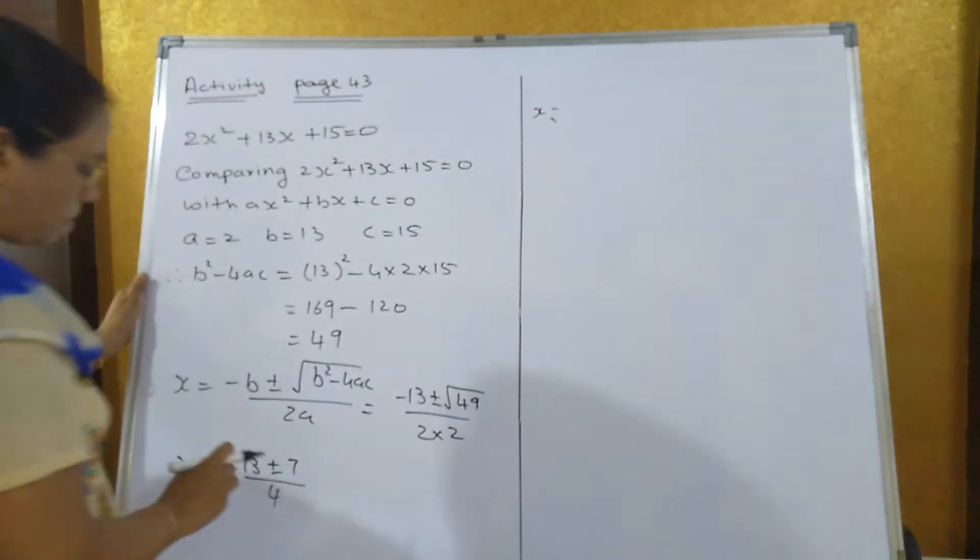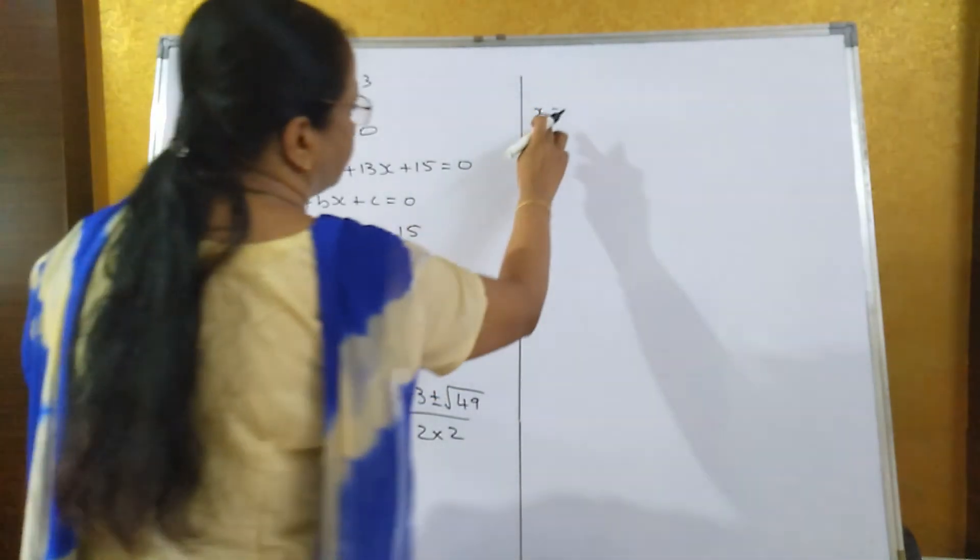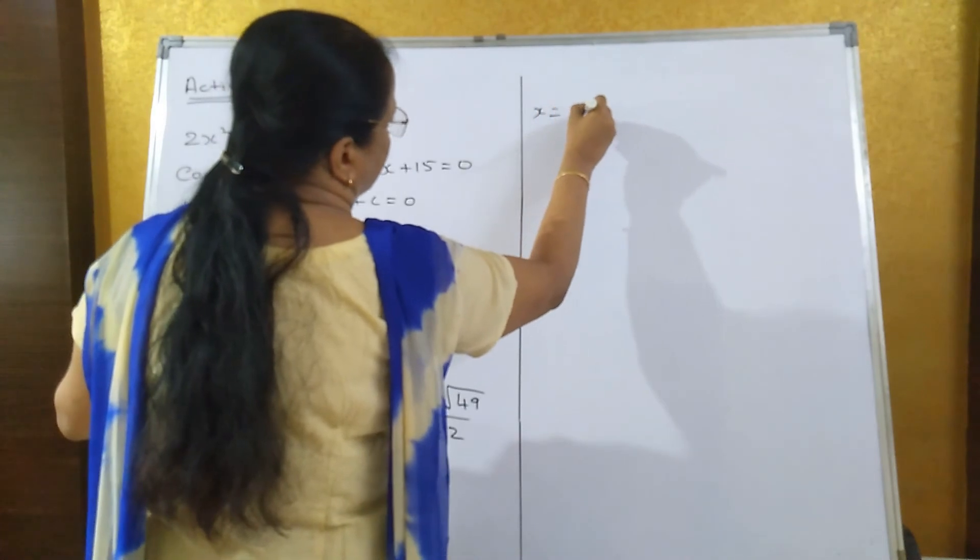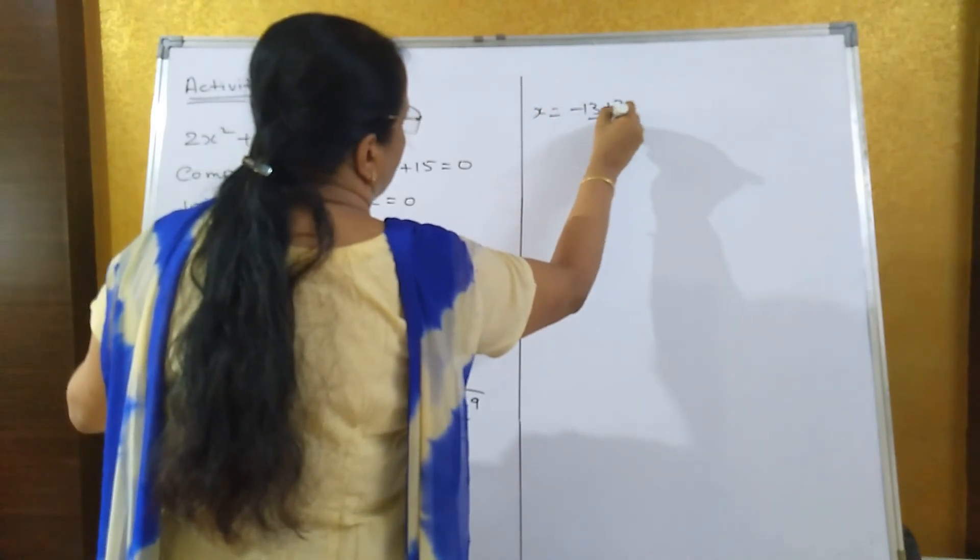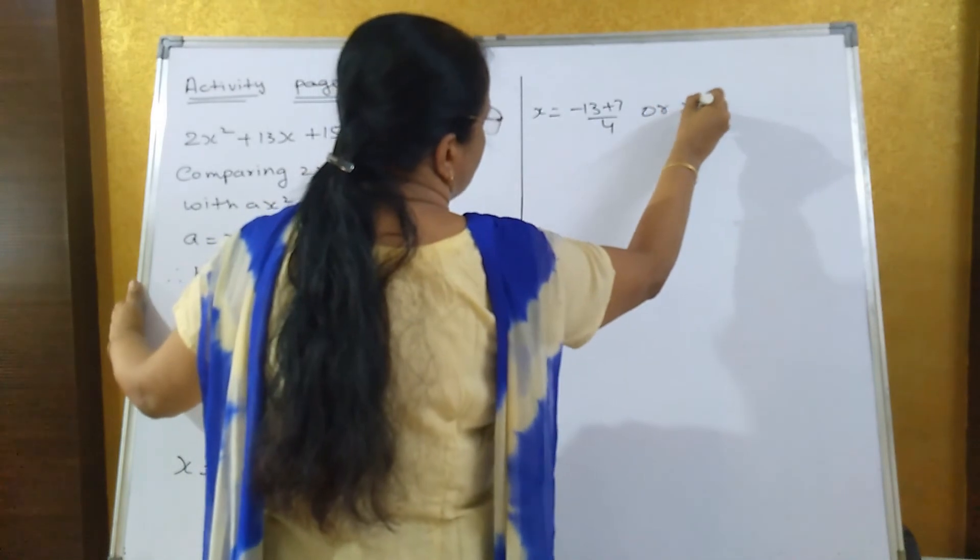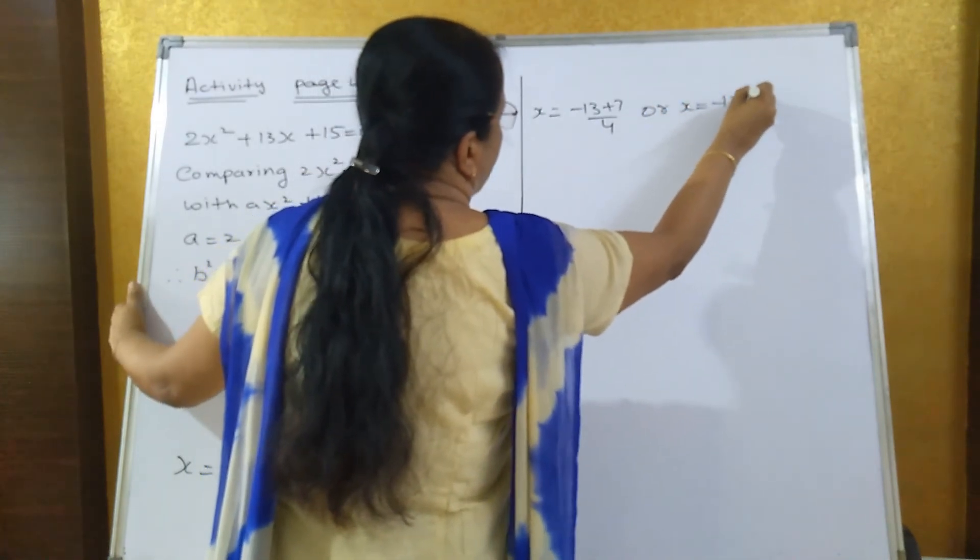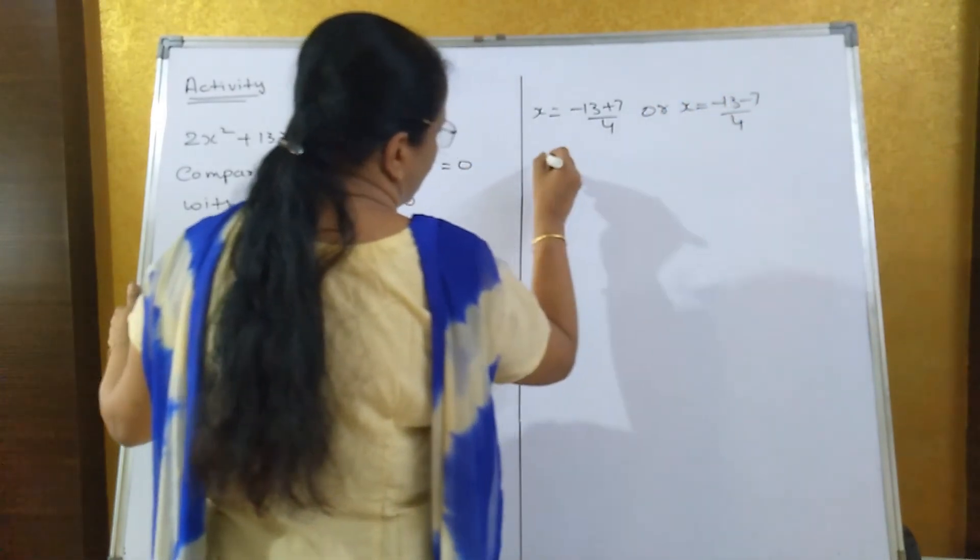x equals minus 13 plus 7 upon 4, or x equals minus 13 minus 7 upon 4. Therefore,